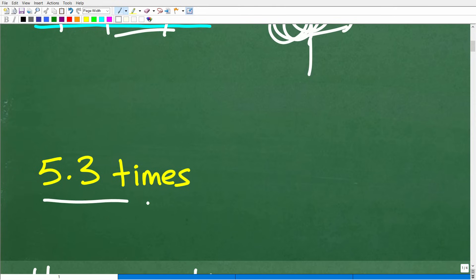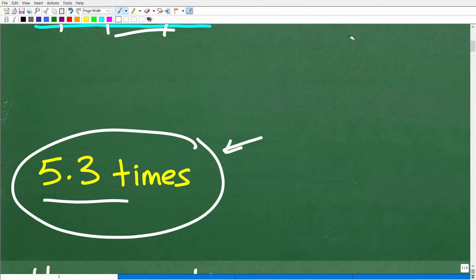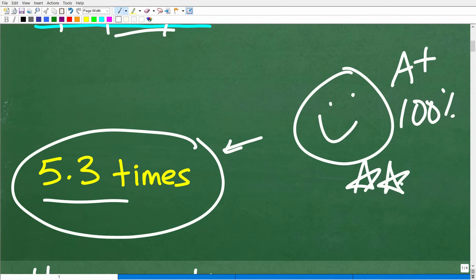And anyways, the answer here, it's going to go around that pulley around 5.3 times. But if you said around five times, I would accept that answer because this is an approximation, but it's a decent approximation. And you'll see what I'm talking about in just one second. But if you got this right, that is fantastic. Matter of fact, we have to celebrate by giving the A+ a happy face, a 100% and multiple stars.